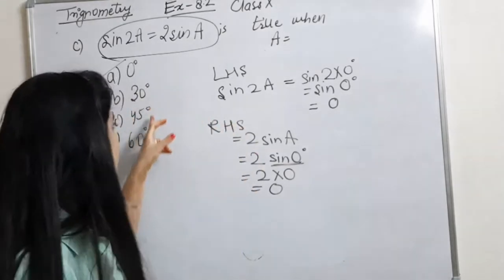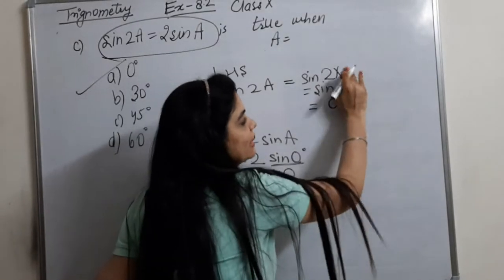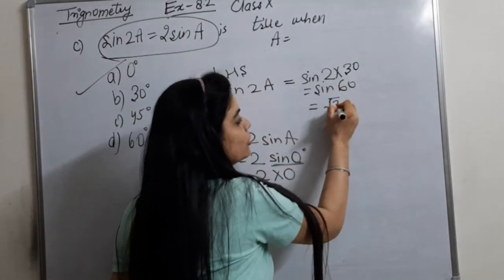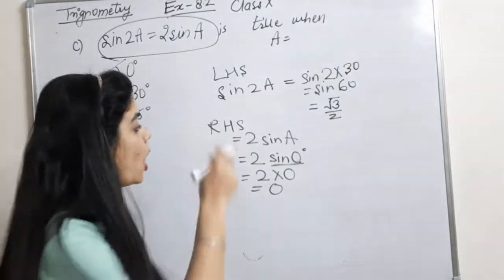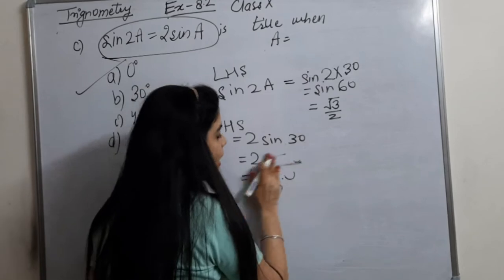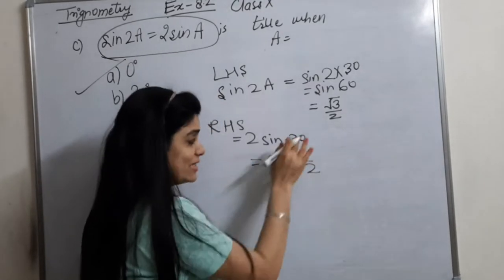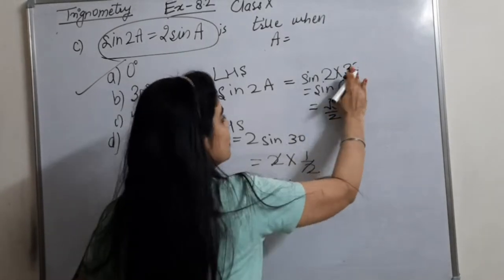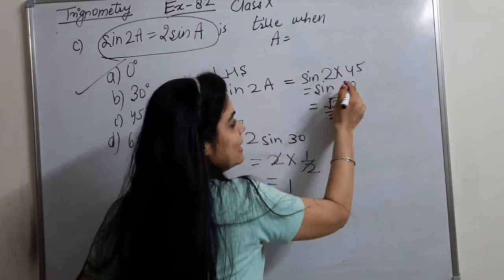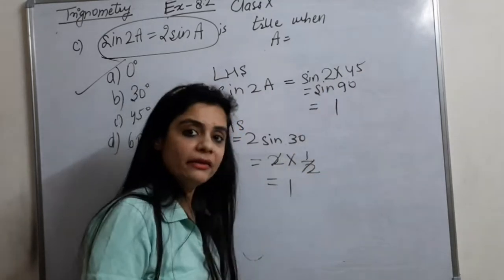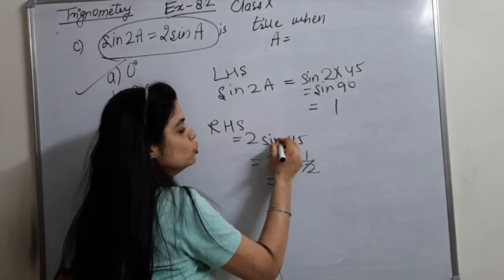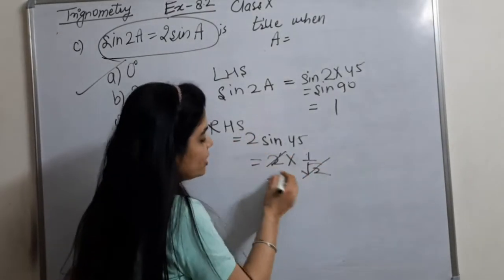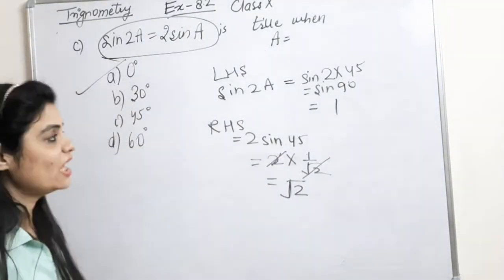But I will still tell you why options 2, 3, and 4 don't work. For 30°: LHS = sin(2×30) = sin 60° = root 3 by 2, but RHS = 2×sin 30° = 2×(1/2) = 1 — not equal. For 45°: LHS = sin 90° = 1, but RHS = 2×sin 45° = 2×(1/root 2) = root 2 — not equal.